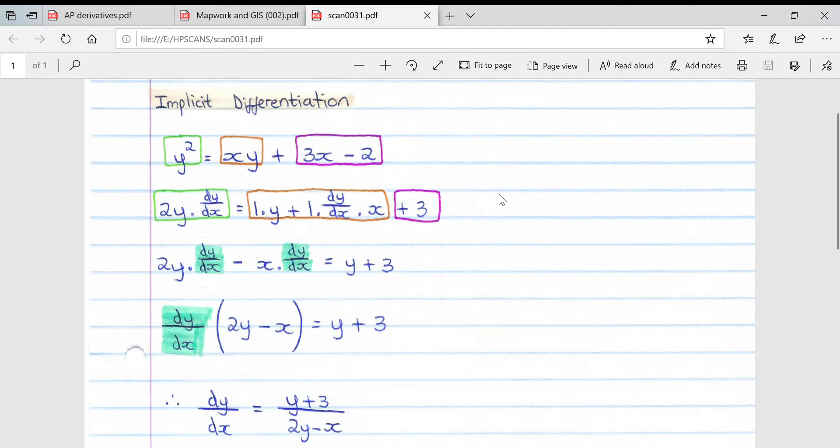This video will cover implicit differentiation, which forms part of the AP math syllabus. If we take an example such as y squared equals xy plus 3x minus 2, we can see that we cannot get a single y term on the left hand side of our equation if we simplify this equation. So we have to implicitly differentiate.